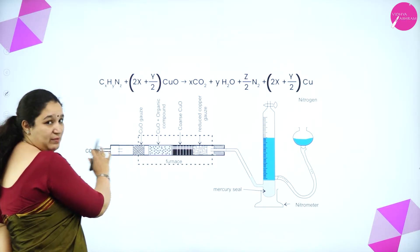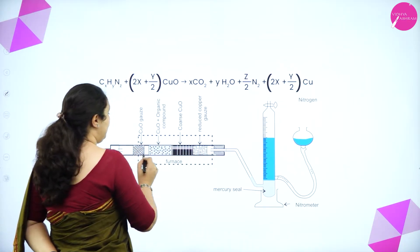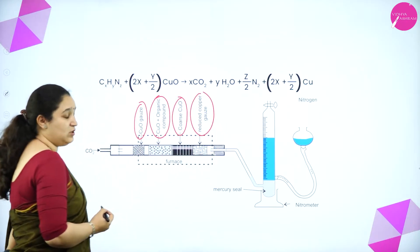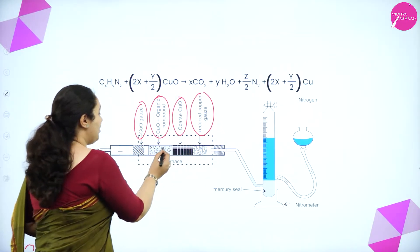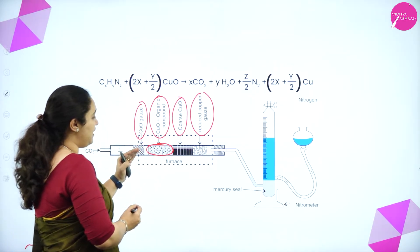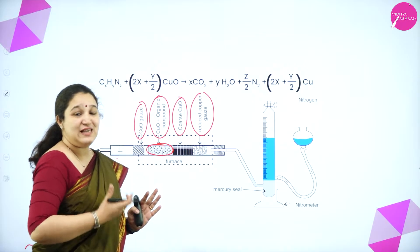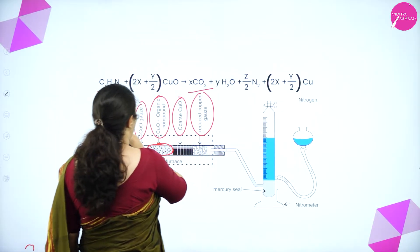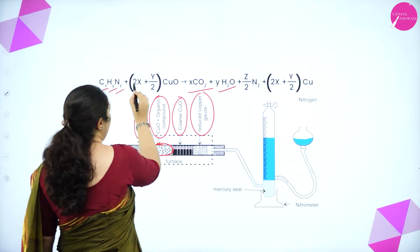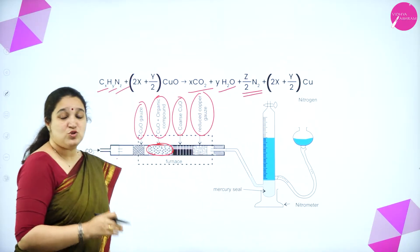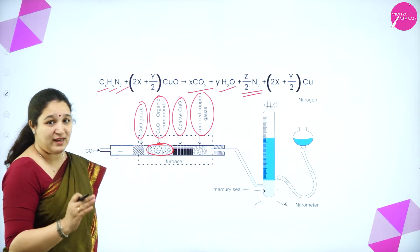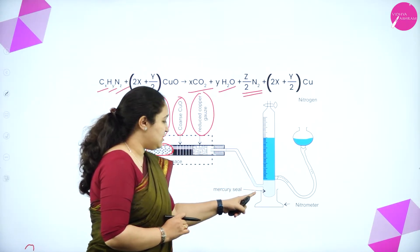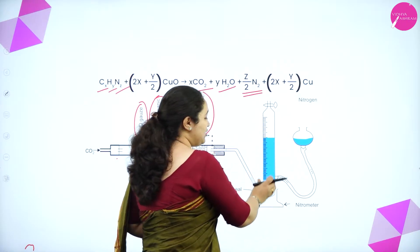We have copper oxide gauze, copper oxide plus organic compound, coarse copper oxide, and reduced copper gauze. As the organic compound and copper oxide are heated in the furnace with carbon dioxide being passed, carbon gets converted to carbon dioxide, hydrogen gets converted to water, and nitrogen gets converted to nitrogen gas. All three — water vapor, carbon dioxide, and nitrogen — exit as gases.